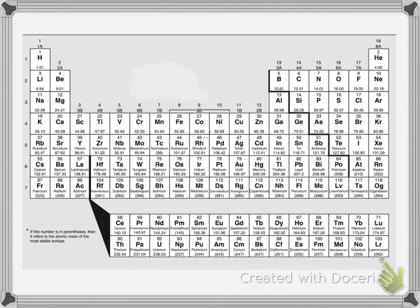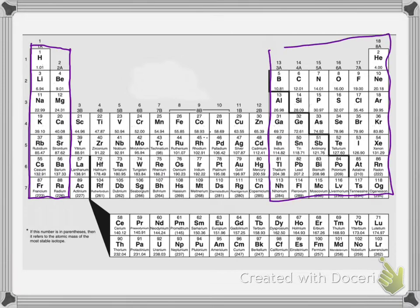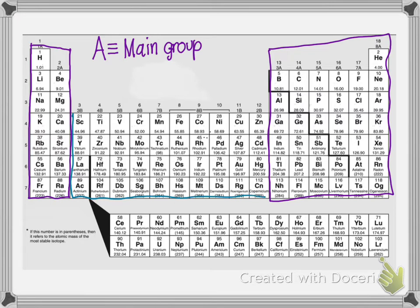The main group elements are all of the tall columns. What all of these columns have in common is their groups have the letter A. So every group that has an A — all of the tall ones — are part of the main group elements. The transition metals are sometimes called transition elements; don't be thrown off, they refer to the same thing. The transition elements are the shorter columns in the middle section.